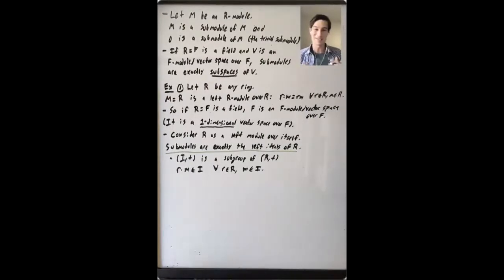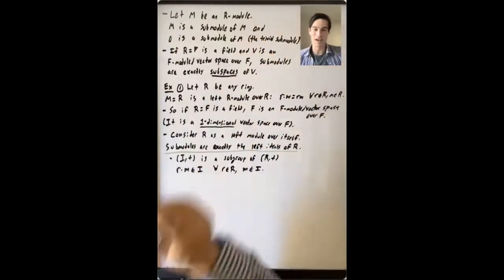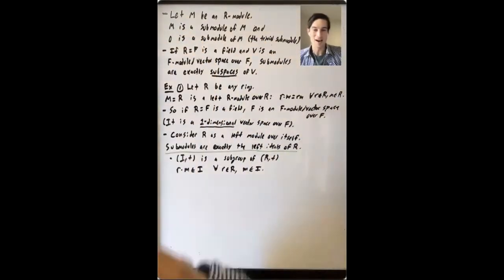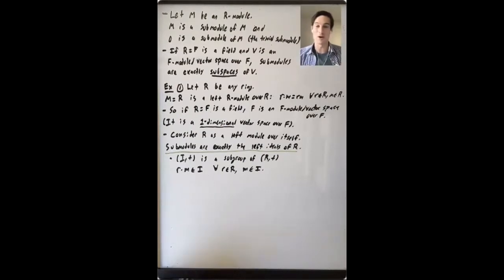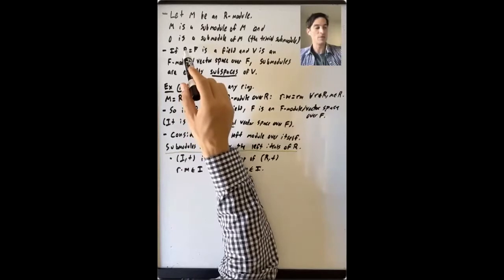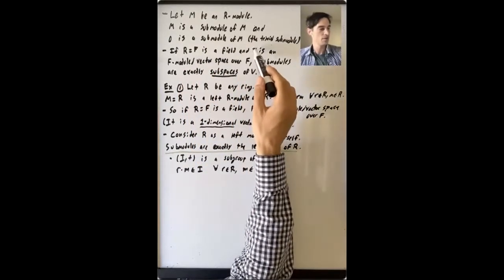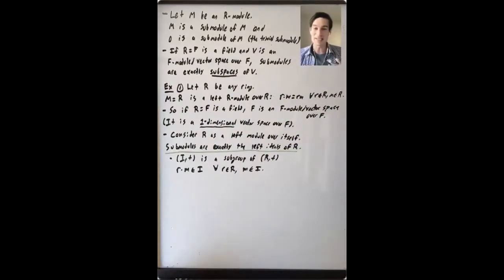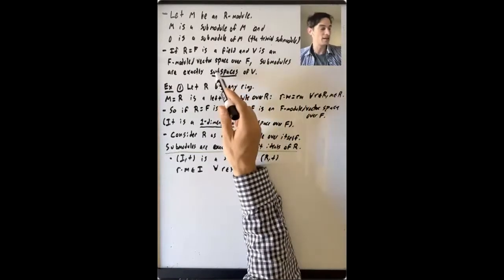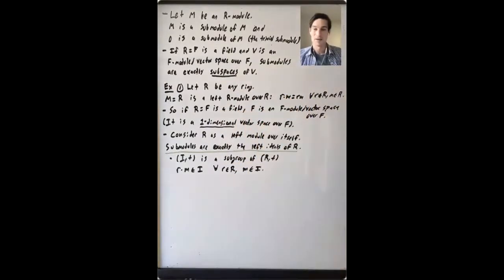Let's talk about some basic examples. If m is an r-module, what submodules must it have? m is a submodule of itself, and {0} — the identity of the abelian group (m, +) — is also a submodule of m. Both are easy to check; the second is called the trivial submodule. If r equals f is a field, then v is an f-module, which is the same as v being a vector space over f. The submodules in this case are exactly the vector subspaces of v.